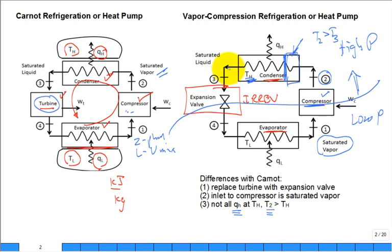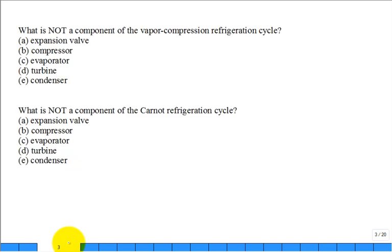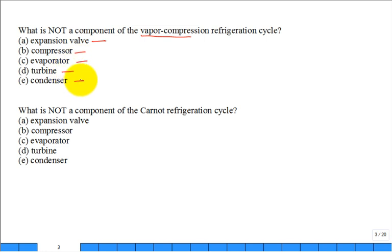Class question: what is NOT a component of the vapor compression refrigeration cycle? Options are expansion valve, compressor, evaporator, turbine, or condenser. The answer is the turbine — you're done for today, thank you for participating.